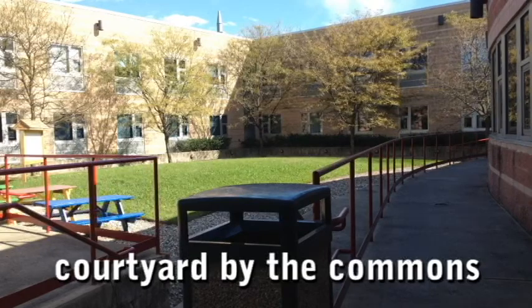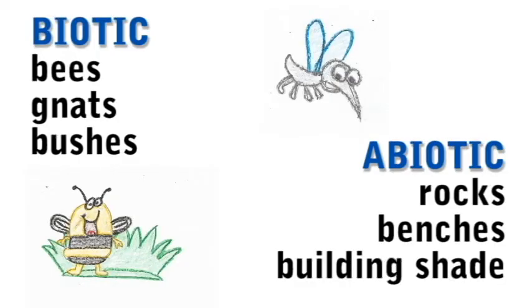In the courtyard by the commons, the biotic factors are going to be mostly flying insects like bees, gnats, even mosquitoes, because there aren't other animals in the courtyard to bring non-flying insects in there. There are also bushes in there that have been planted. For abiotic factors, there are rocks and benches, even shade from the buildings. So a lot of the factors in this courtyard are brought in by humans.